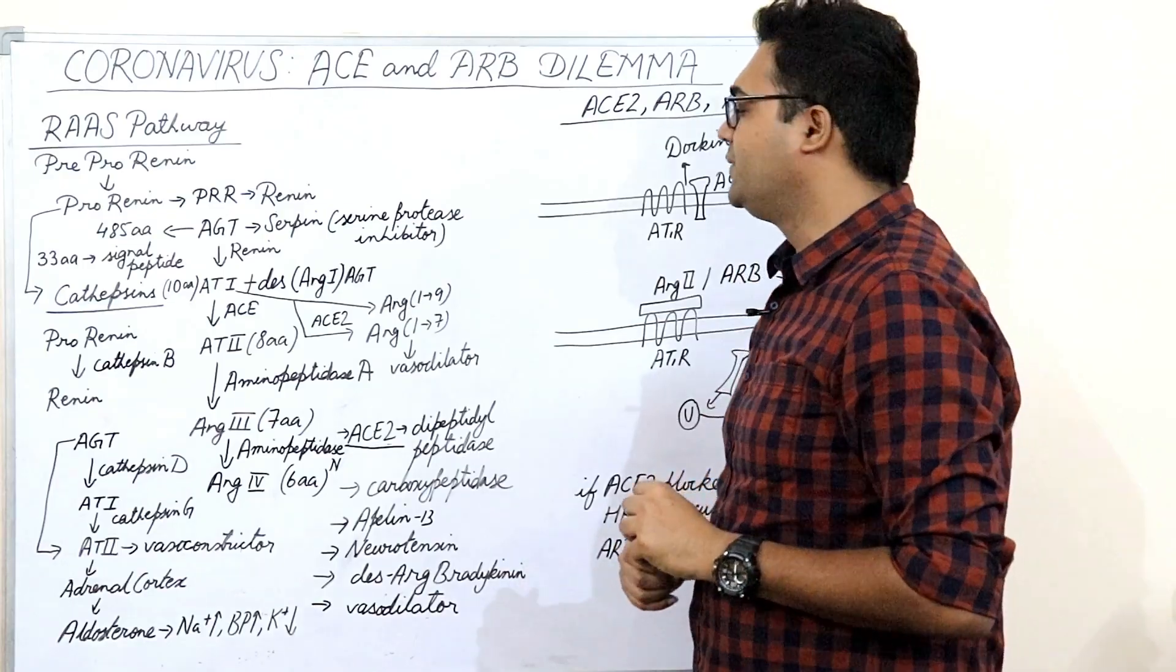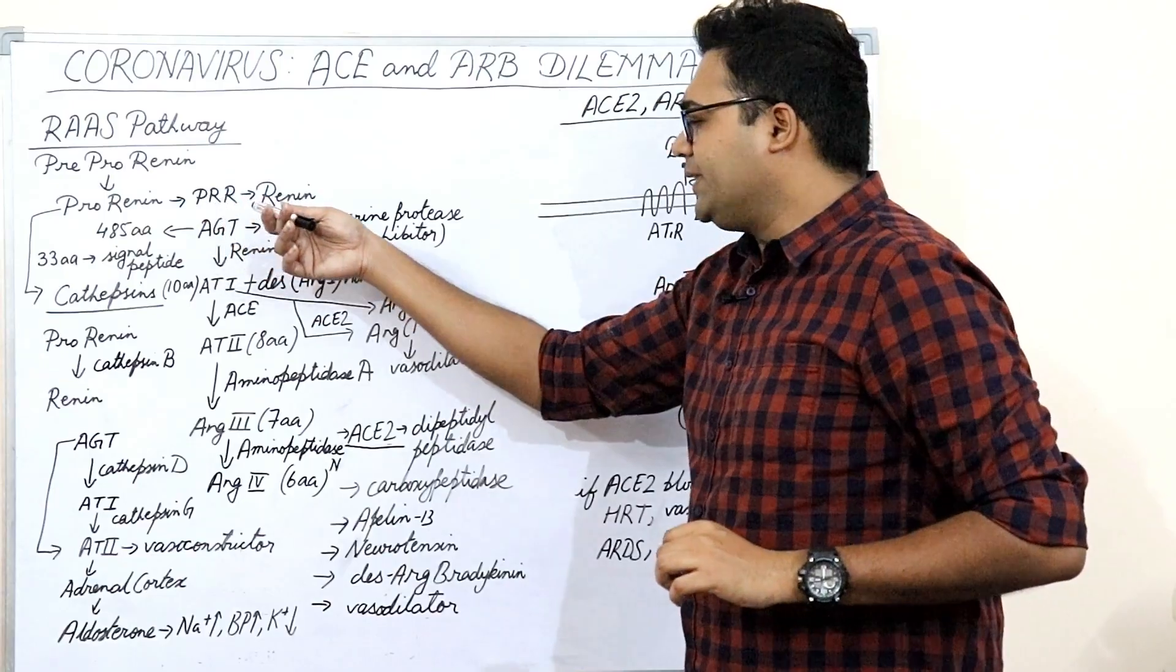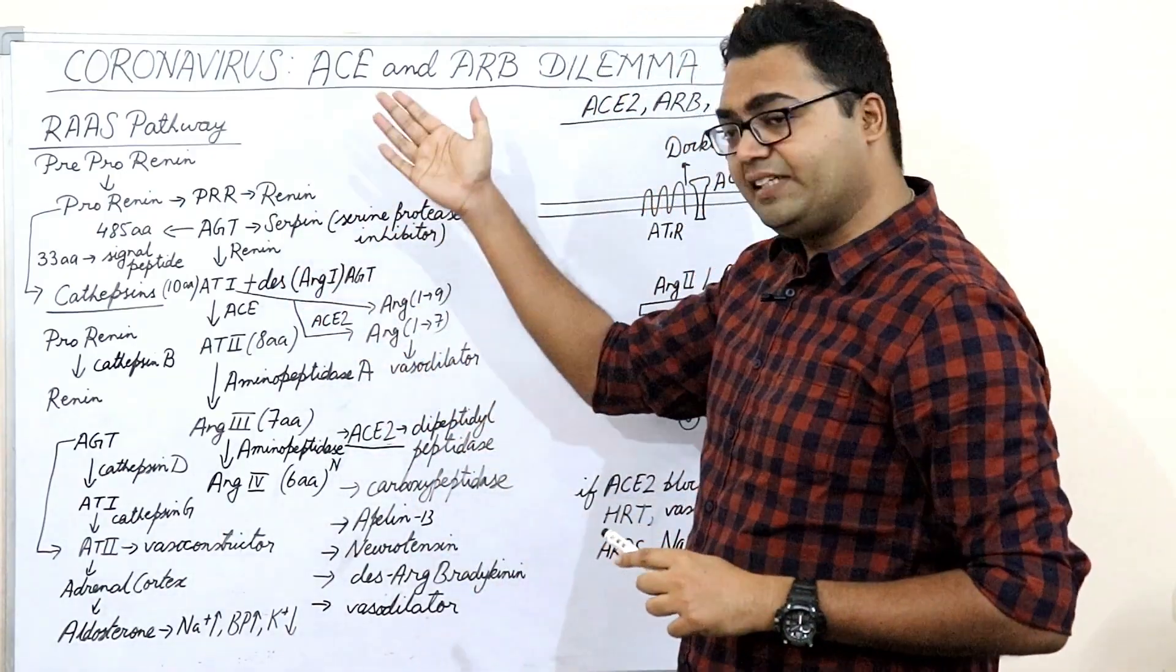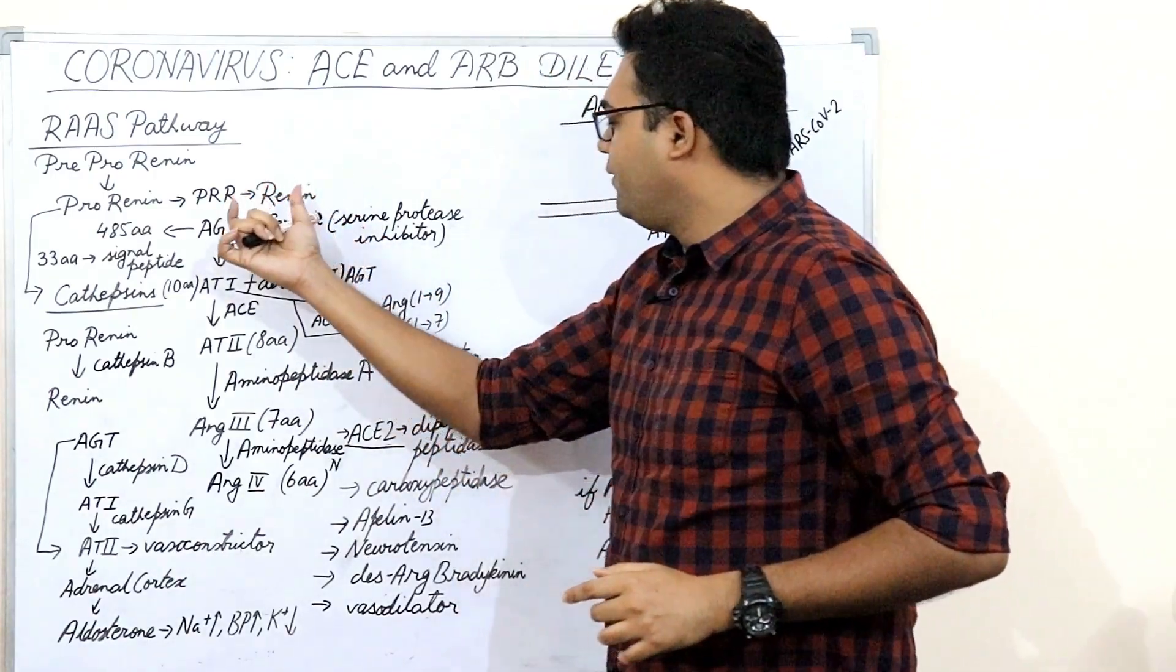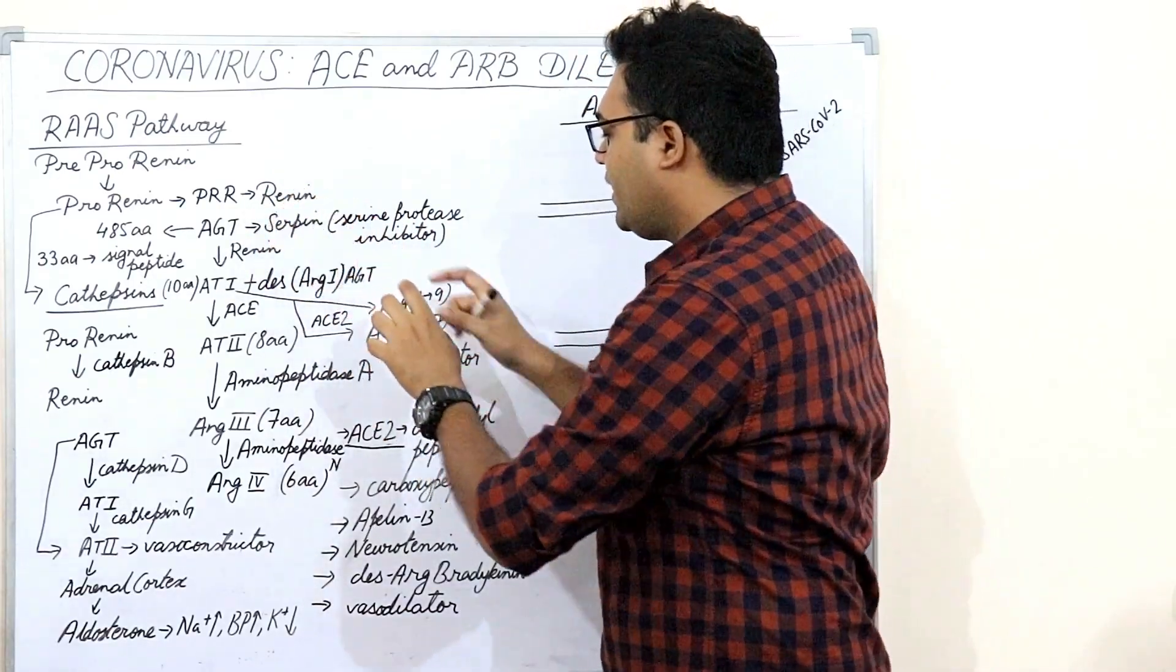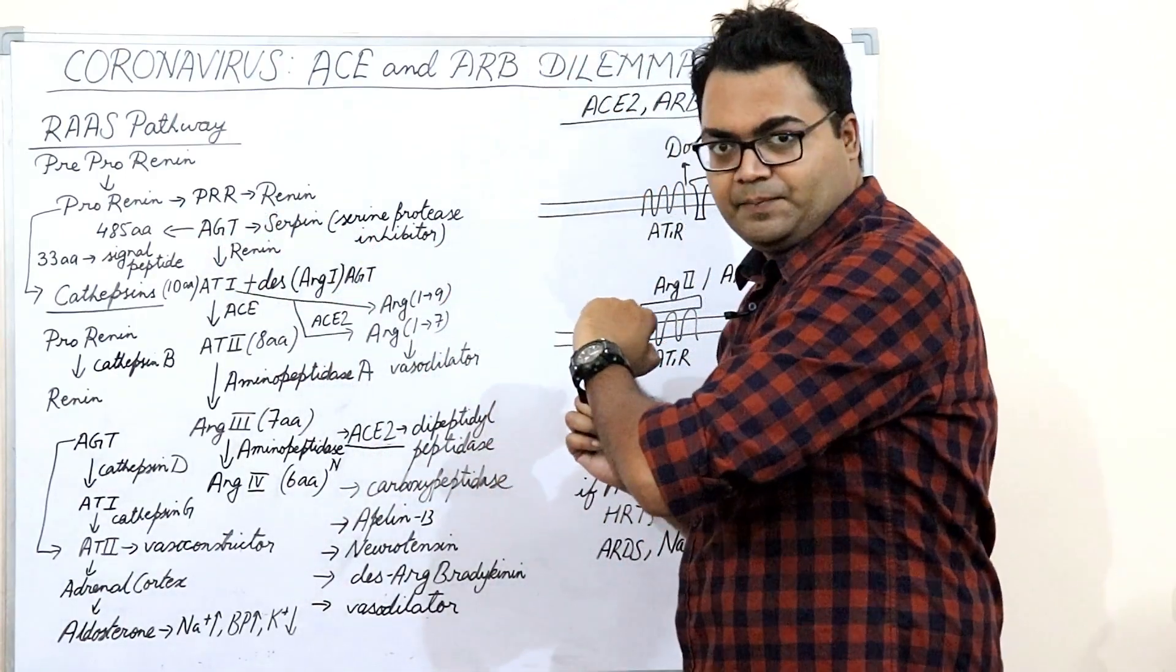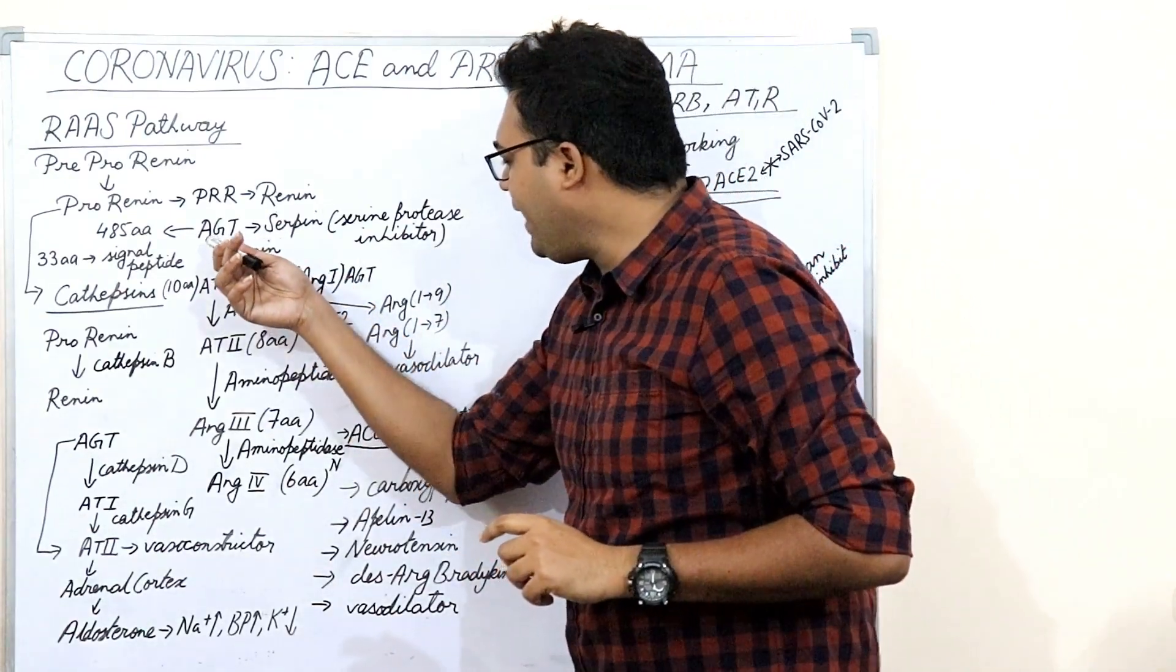Renin is produced from the juxtaglomerular apparatus in the nephrons of our kidney. Each kidney has 1.25 million nephrons. After binding to the PRR, prorenin receptor, the prorenin gets converted into renin and it also activates the receptor and initiates the MAP kinase pathway. Once renin is completely produced, it belongs to a specific protease and will be breaking down your angiotensinogen. Angiotensinogen is produced by liver.